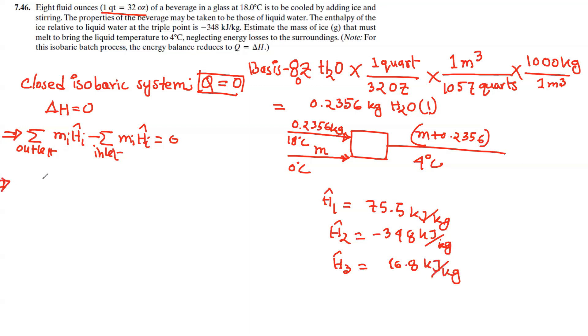Using mass balance: (M plus 0.2356) times 16.8 equals 0.2356 times 335 plus M times minus 384. Simplifying: M times 344 equals zero. Solving the equation gives M equals 0.038 kg. That's the answer to the problem.